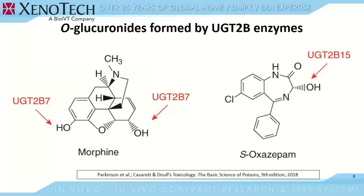Oxazepam is glucuronidated by UGT2B15, which preferentially glucuronidates S-oxazepam over its R enantiomer. About 10% of the population appear to be poor glucuronidators of S-oxazepam, and one study has implicated the low activity of the UGT2B15 star 2 allele as a possible determinant of such variation.